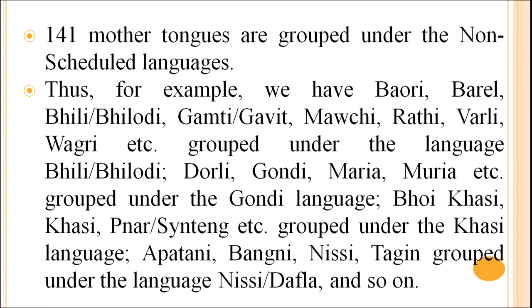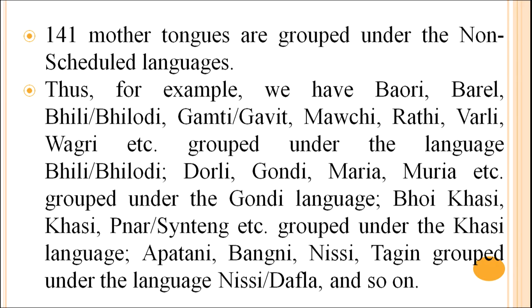The remaining 141 mother tongues are grouped under non-scheduled languages. For example, Bauri, Bareli, Bhili (Bhilodi), Gamthi (Gavit), Mawchi, Rathi, Varli, Vagri, etc. are grouped under the Gondi language. Bhoi Khasi, Khasi, Panar (Synteng), etc. are grouped under Khasi. Apatani, Bangni, Nishi, and Tagin are grouped under the language Nishi, also known as Duffla.